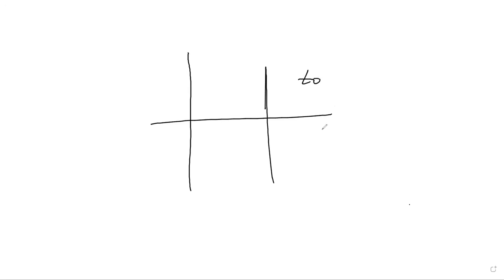The way it works is the following: we have a memory and suppose that our memory is divided into two parts. Let's call the two parts the 'to' part and the 'from' part. The way it works is we allocate memory every time you do a 'new' — every time you ask for dynamic heap memory — we allocate from the 'to' space.